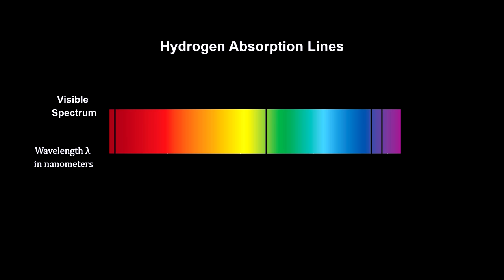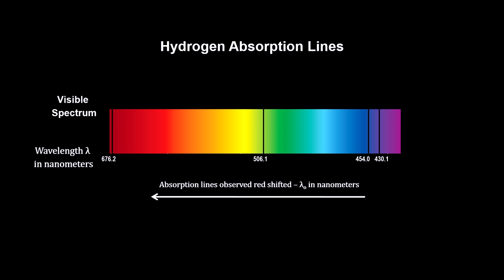And light from a receding star has its wavelengths lengthened. We see the lines shift to the red. They are said to be red-shifted.